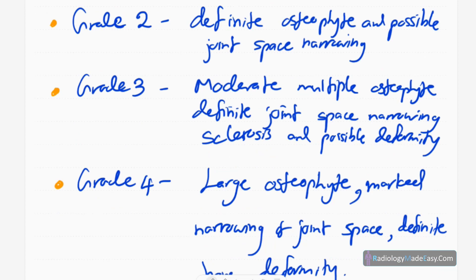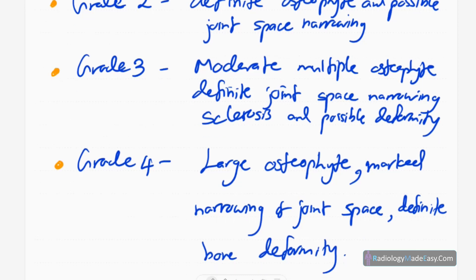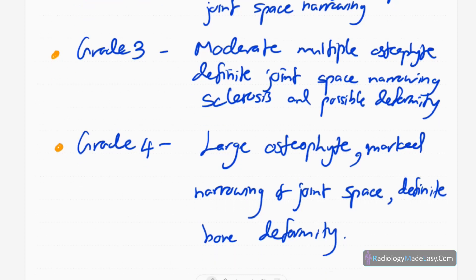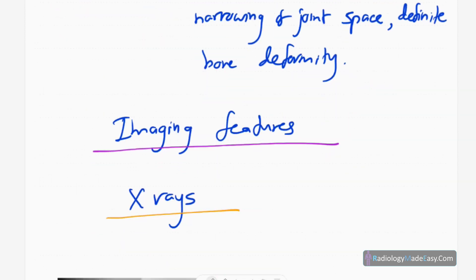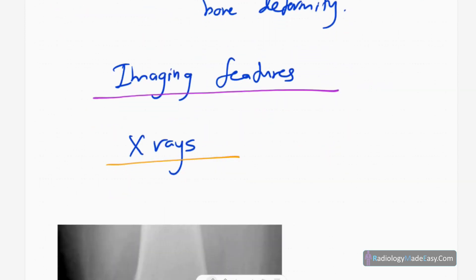In grade three, there is moderate multiple osteophyte formation, definite joint space narrowing, subchondral sclerosis in the periarticular region, and possible or early deformity. Grade four is the most severe — there are large multiple osteophytes, marked joint space narrowing, and bone deformity; subluxations and dislocations can also be present.